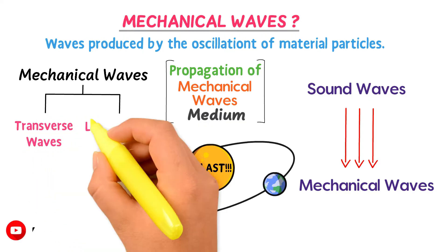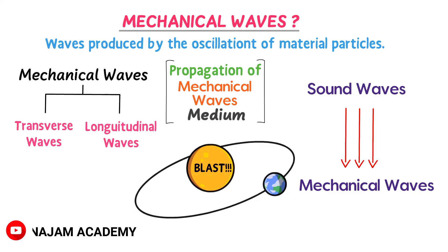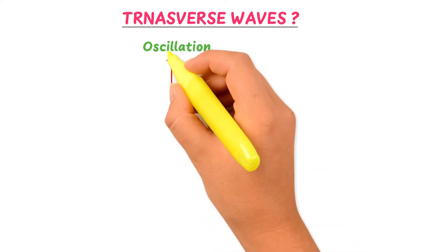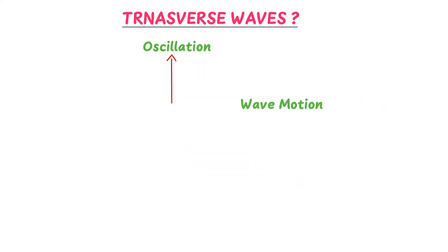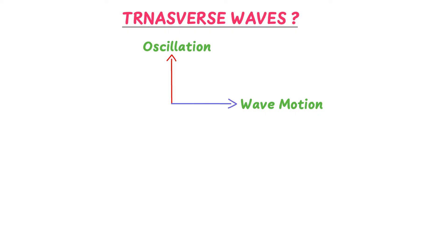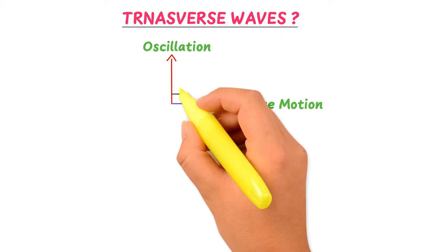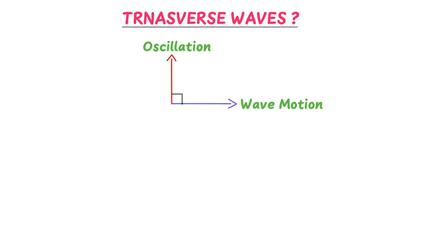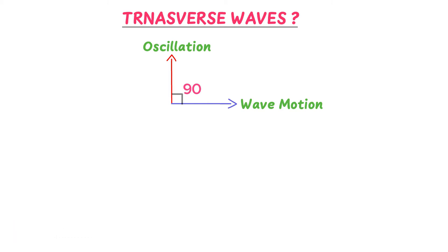If the oscillations of particles are in the y direction and the motion of the wave is in the x direction, we call it a transverse wave. Note that in transverse waves, the angle between the oscillations of particles and the wave motion is 90 degrees, or they are perpendicular to each other.